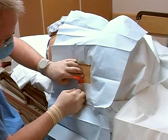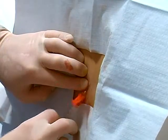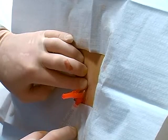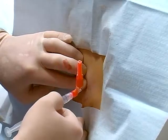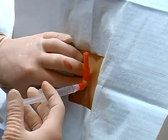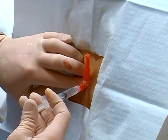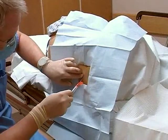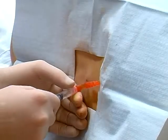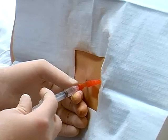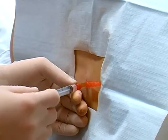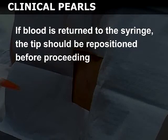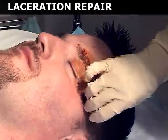Insert a small 25 to 30 gauge needle just under the epidermis, and inject 0.5 to 1 milliliter of anesthetic. Begin to anesthetize the deeper tissues by directing the same needle perpendicularly through the wheal and injecting another milliliter or so. If even deeper tissues need to be anesthetized, switch to a longer 22 gauge needle and proceed in the same fashion. Aspirate the syringe intermittently during the injection to exclude inadvertent vascular placement. If blood is returned to the syringe, the tip should be repositioned before proceeding.